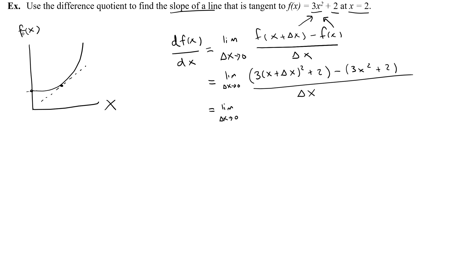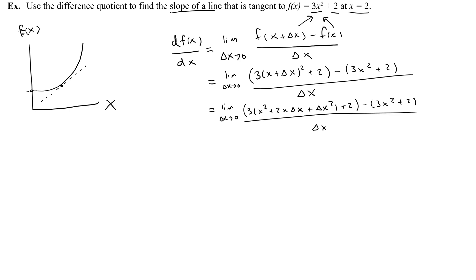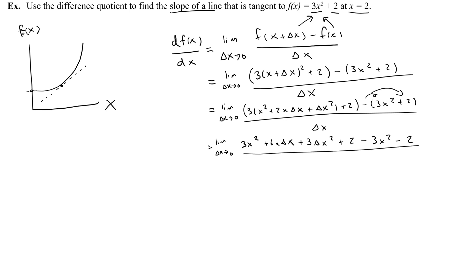Rewriting the limit, I start simplifying the top. Expanding 3 times x plus delta x squared gives 3 times x squared plus 2x delta x plus delta x squared, plus 2. Then subtract negative 3x squared minus 2, all over delta x. Distributing: 3x squared plus 6x delta x plus 3 delta x squared plus 2, minus 3x squared, minus 2, over delta x.